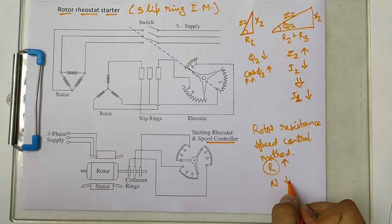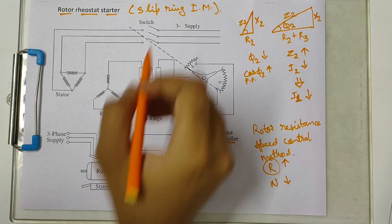In running condition what we do is that we increase or decrease or change the value of this resistance to change the value of speed. If we increase the resistance then the speed will decrease. This is a very simple method. It is applicable to only slip ring induction motor.